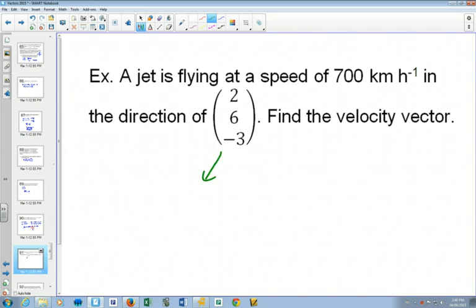So if we figure out the magnitude of this, we're going to get the square root of 4 plus 36 plus 9, which is equal to 7, square root of 49.